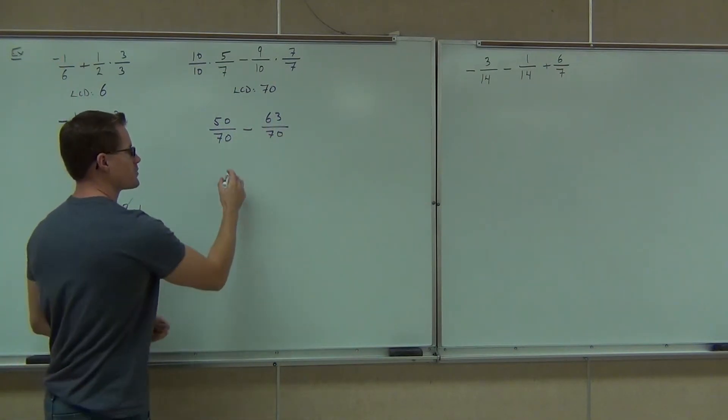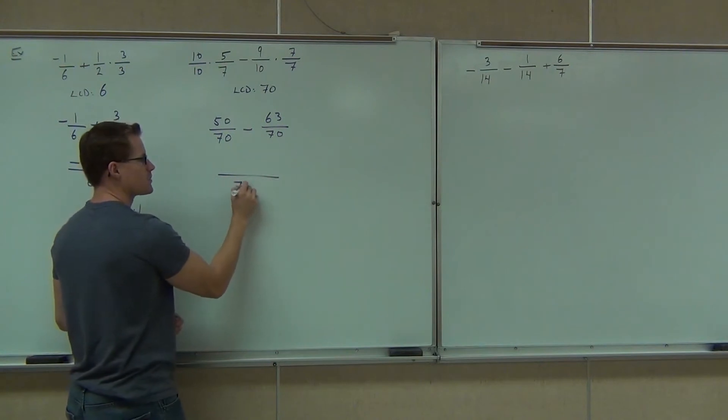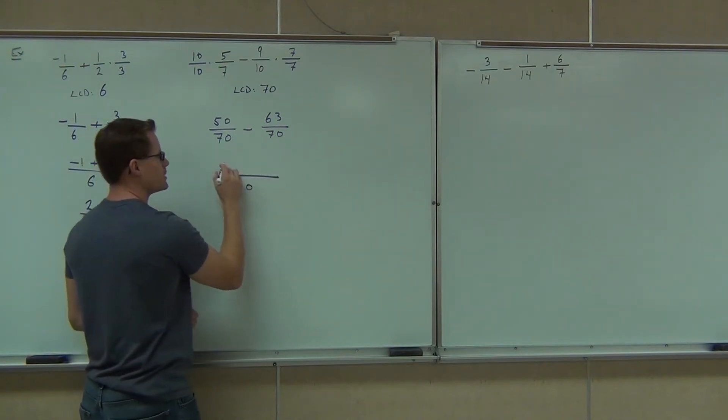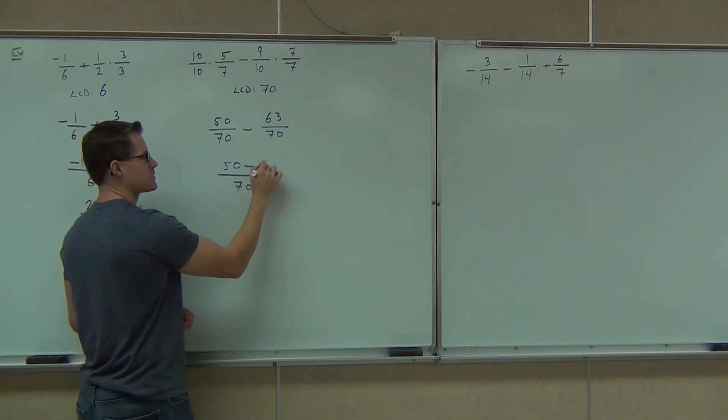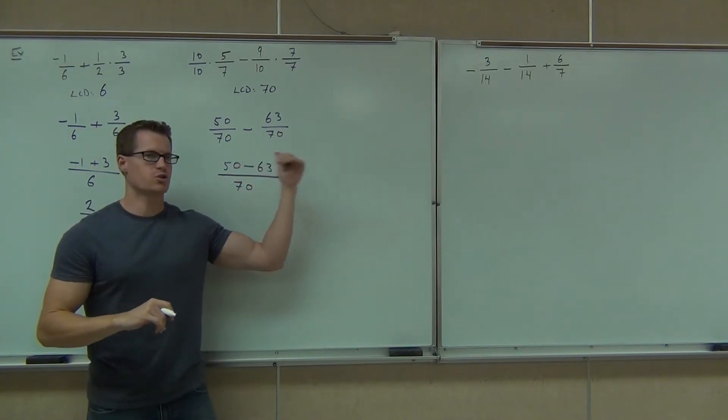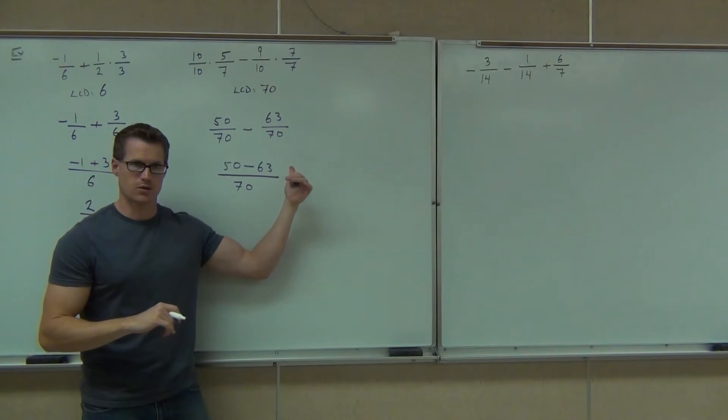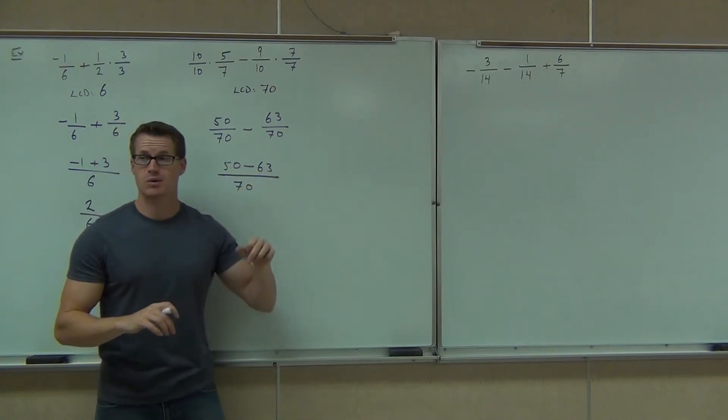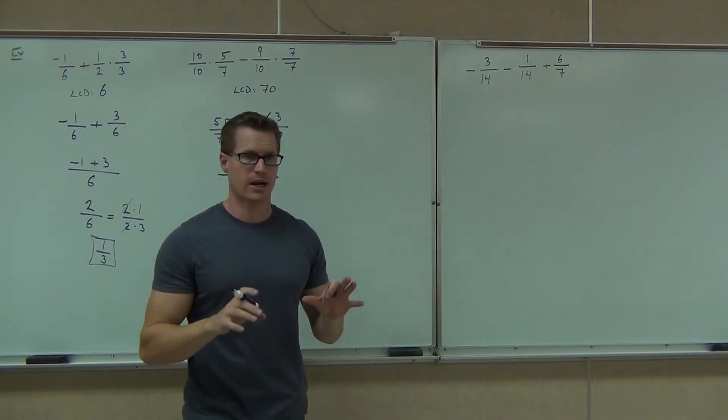Show me one more step. Let's go ahead and write this as one fraction. We'll have something over 70, and this number is going to be 50 minus 63. Change that to a plus negative if you want to use the addition rule, or do the subtraction directly.